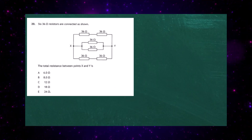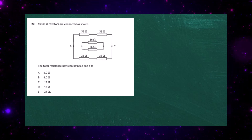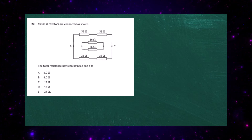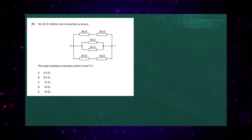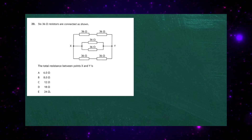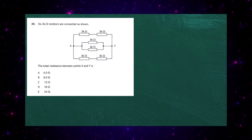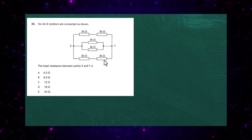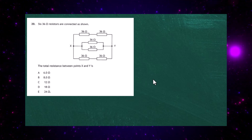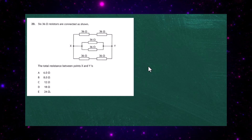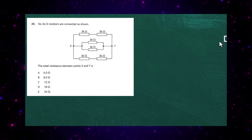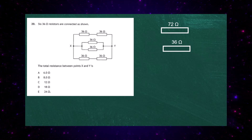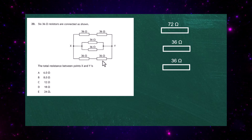Question 20 from Paper 1 of the 2023 Higher Physics Examination. Six 36-ohm resistors are connected as shown and we must find the total resistance between points X and Y. Rather than using the 1/R_T formula, there's a simpler approach. The circuit has three branches: the top and bottom are each two 36-ohm resistors in series (giving 72 ohms each), while the middle branch has two 36-ohm resistors in parallel.